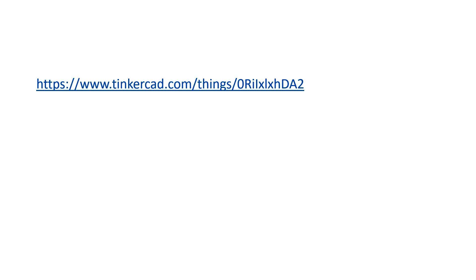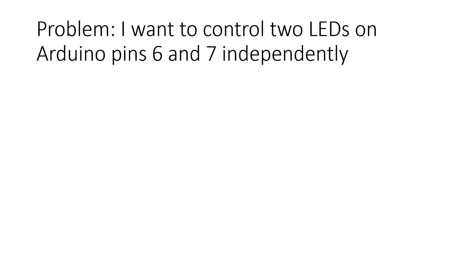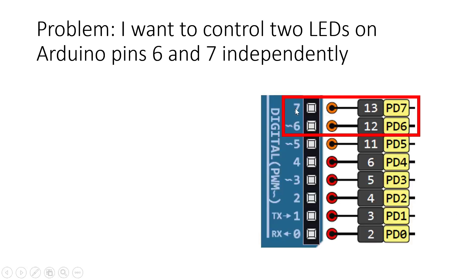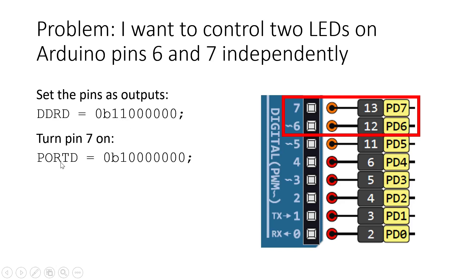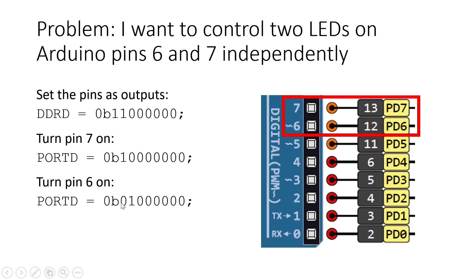My problem is that I want to control two LEDs on Arduino pins six and seven independently. On my Arduino, pins six and seven correspond to port D bits six and seven. To set that up, I need to set them as outputs using the DDRD, or data direction D register, setting bits six and seven to one. To turn pin seven on, I use the port D register to set that bit to one. To turn pin six on, I set that bit to one — but the problem is I'm overwriting all of the other bits with zeros, inadvertently turning pin seven off. I want to control the LEDs independently without accidentally turning one off when I turn the other on.